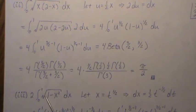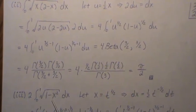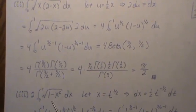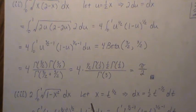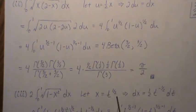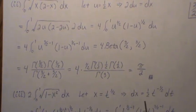Now the next one does not look like it could be solved with the beta distribution, but it can. So let's let x equal t to the 1/2, which then differentiating we get this.